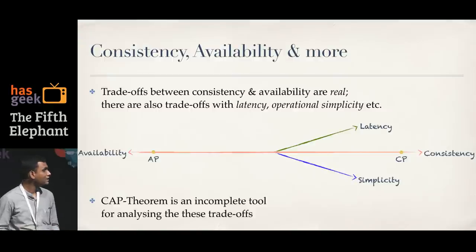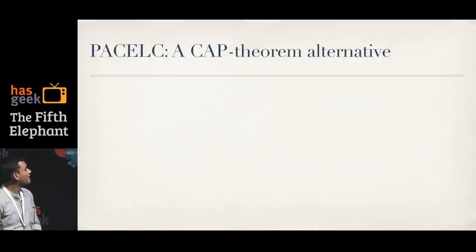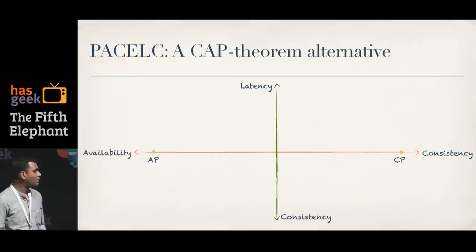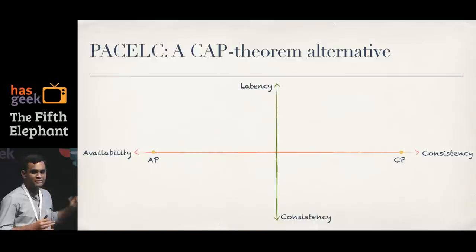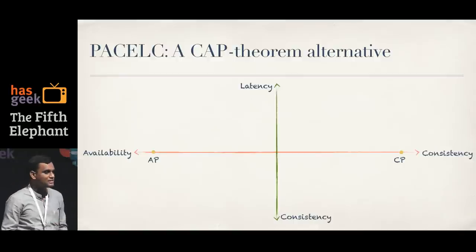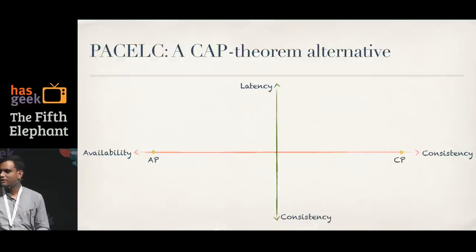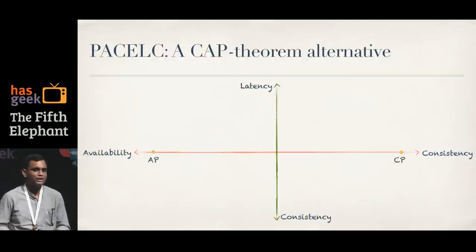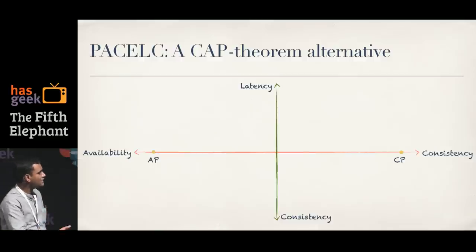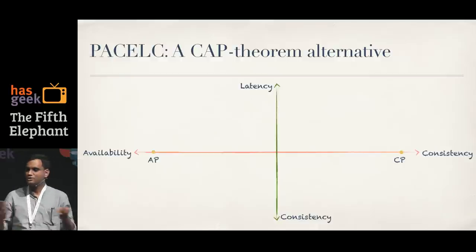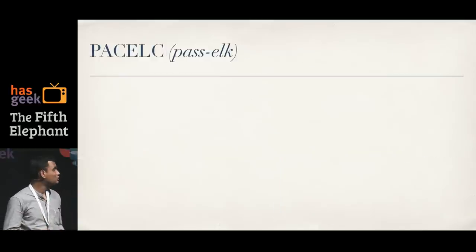So what is the alternative? I'll present one here: PACELC — pronounced 'pass-elk.' This has been gaining popularity over roughly the past year. What it does is talk about trade-offs between consistency and availability when there is a partition, and trade-offs between latency and consistency when there is no partition. Note that consistency appears on both axes. Even availability appears twice, because infinite latency is effectively unavailability. The vertical axis is about normal operation with no partition; the horizontal axis is about behavior during a partition.